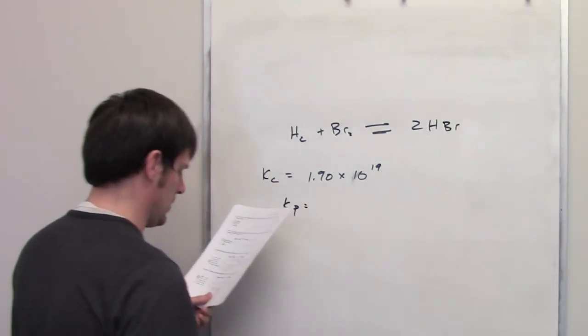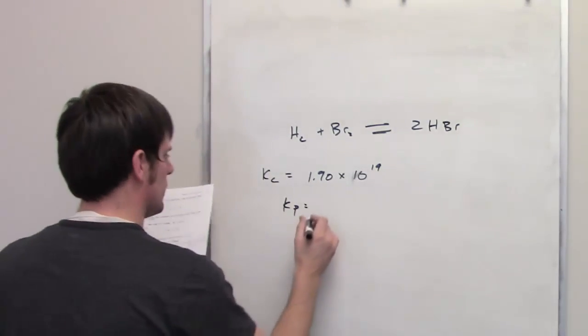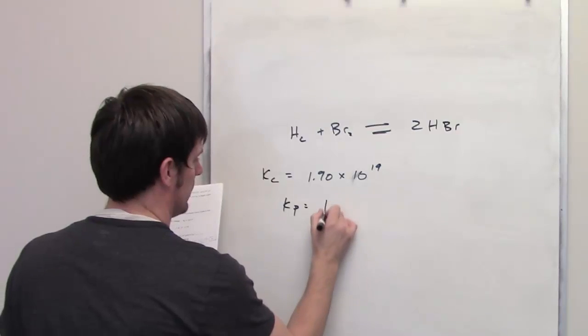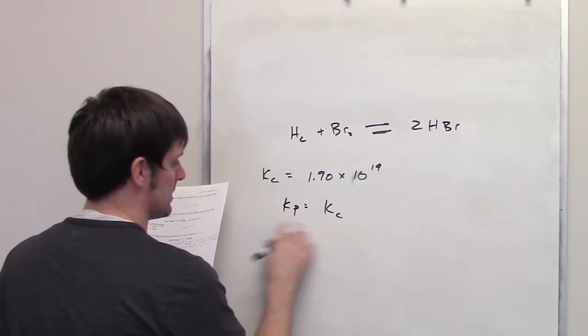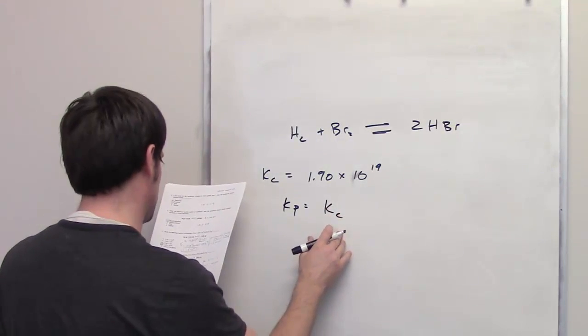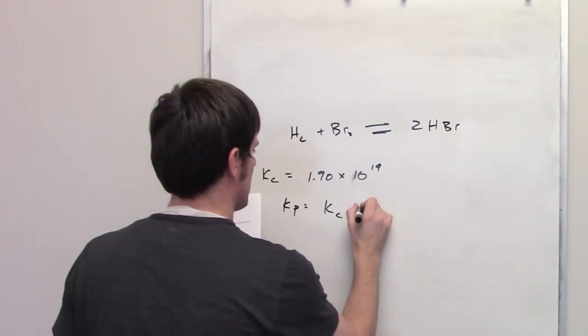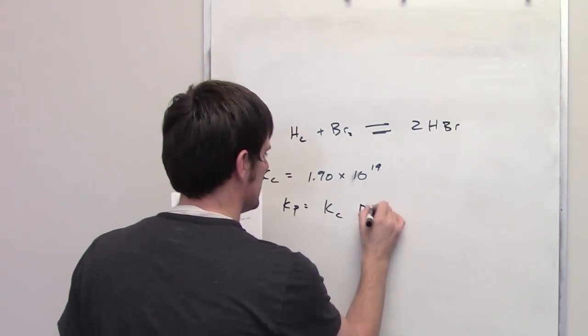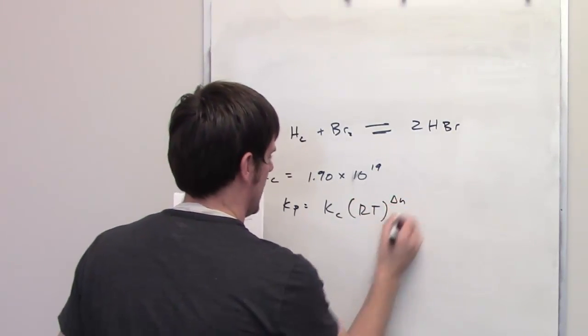As I outlined earlier, there exists an equation that says Kp is equal to Kc multiplied by RT raised to the delta N.